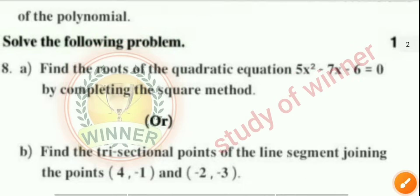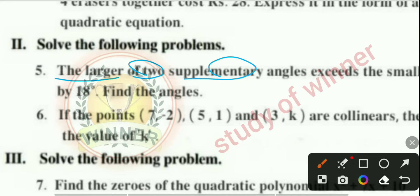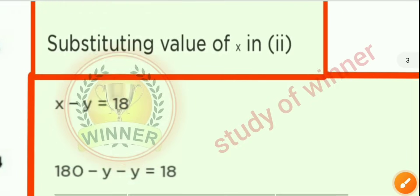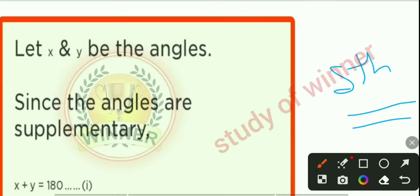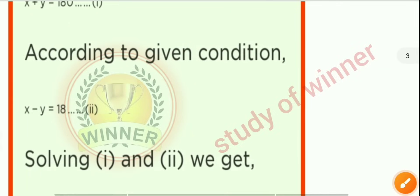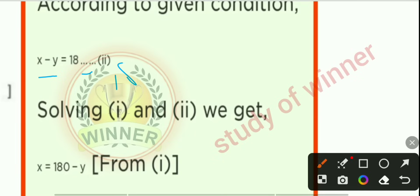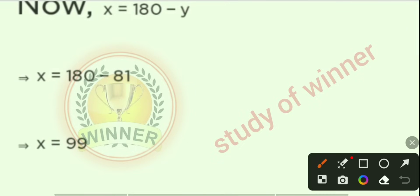Question 5: the larger of two supplementary angles exceeds the smaller by 18 degrees — find the angles. Let x and y be the angles. Since the angles are supplementary: x + y = 180°. According to the given condition: x - y = 18. Solving gives y = 81° and x = 99°.